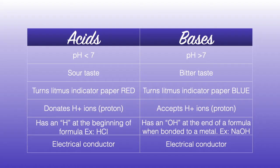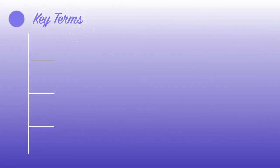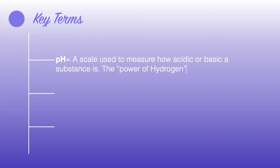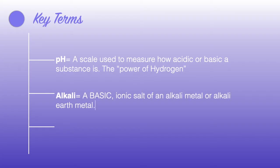Let's take a look at some key terms. The first one is pH. pH is a scale used to measure how acidic or basic a substance is. pH can refer to the power of hydrogen. Alkali is a basic ionic salt of an alkali metal or alkali earth metal, and you can find those in the periodic table.